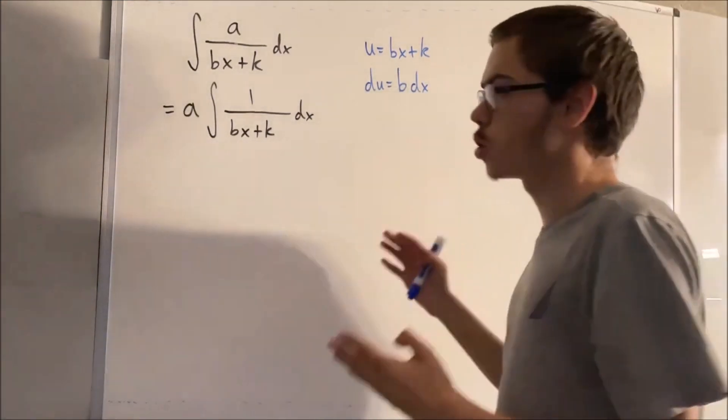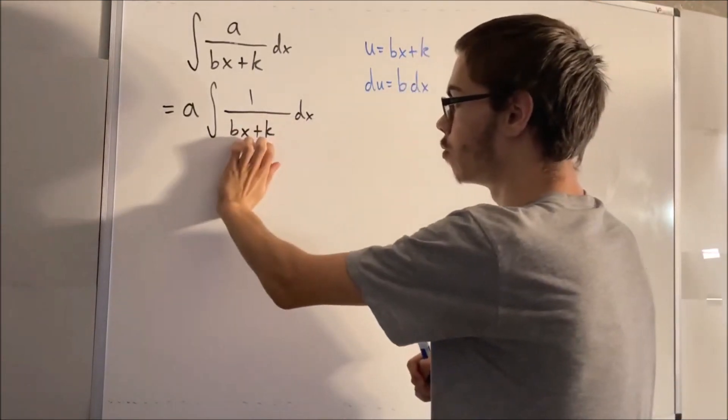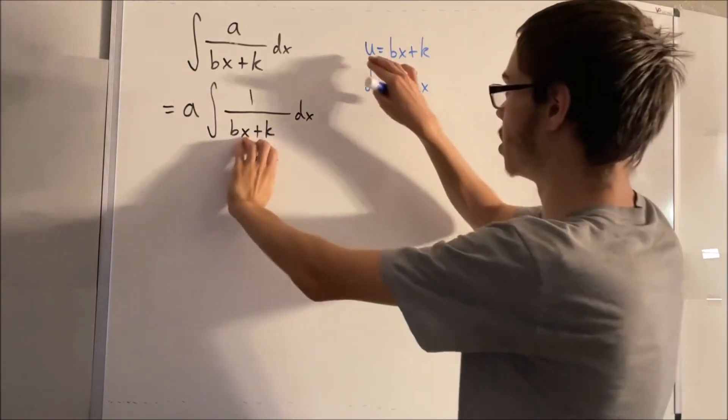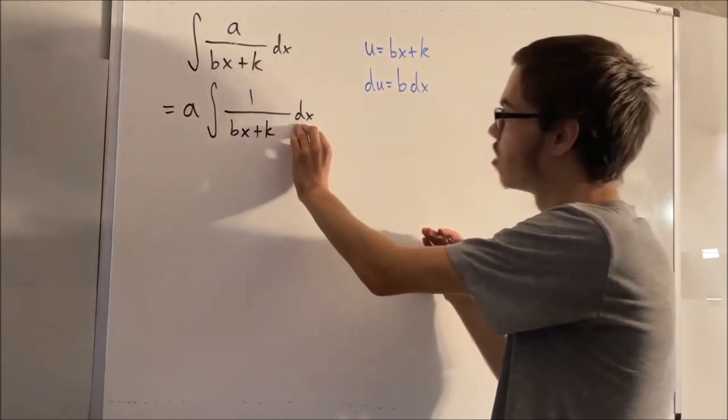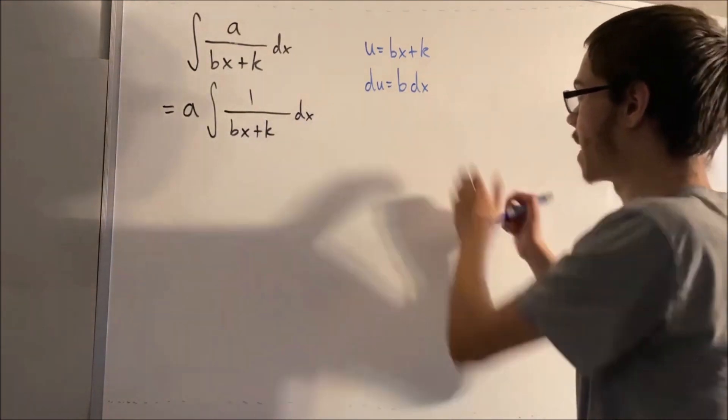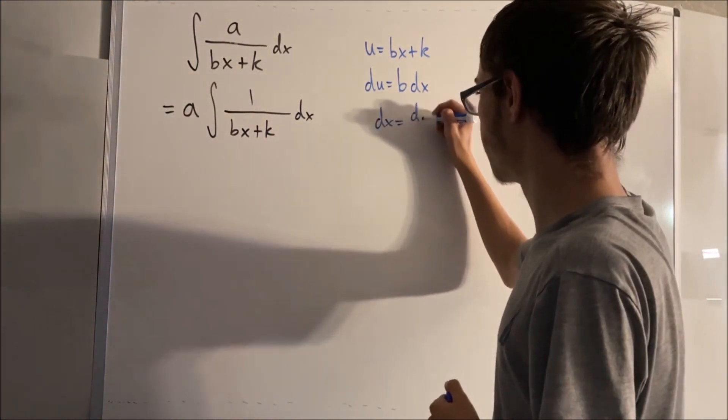So we need to make sure we get this integral in terms of u. We know we're substituting what we have in the denominator with u. So what's the dx going to become? Well, if we solve for dx, we see that this is just going to be du over b.